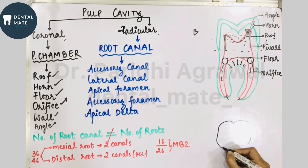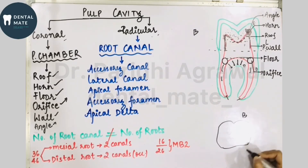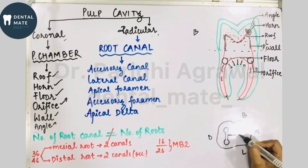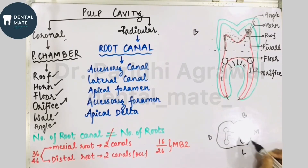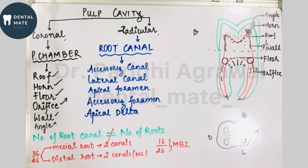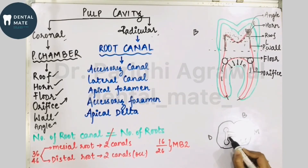Looking at the occlusal view, with buccal, lingual, mesial, and distal orientations, the angles are named based on their position — for example, the mesio-lingual angle of the pulp chamber. The walls are similarly named: buccal wall, mesial wall, lingual wall, and distal wall. This is how terminologies are assigned to the pulp chamber.